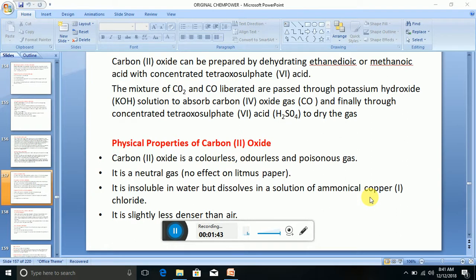Now let's look at the physical properties of carbon (II) oxide. Carbon (II) oxide is a colorless, odorless, and poisonous gas. It is a neutral gas, which means it has no effect on litmus paper. It is insoluble in water but dissolves in a solution of ammoniacal copper chloride. It is slightly less dense than air.